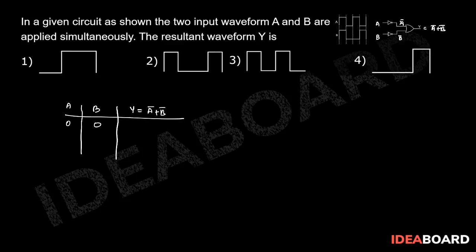If A is 0 and B is 0, A dash will be 1 and B dash will be 1, so A dash plus B dash will be equal to 1. If A is 1 and B is 0, then Y will be equal to 1. Similarly, A is 0, B is 1, then also Y will be equal to 1. And if both A and B are 1, then Y will be equal to 0.